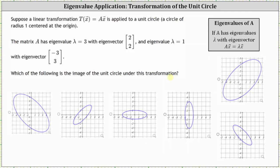To begin, remember: any scalar multiple of the vector (2, 2), except the zero vector, would be an eigenvector corresponding to lambda equals three. And any scalar multiple of the vector (-3, 3), except the zero vector, would be an eigenvector corresponding to lambda equals one. Because we have the eigenvalues and corresponding eigenvectors, we know matrix A times vector x equals lambda times vector x, where vector x is an eigenvector.